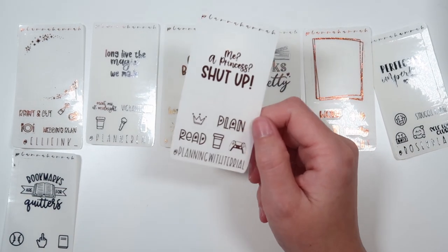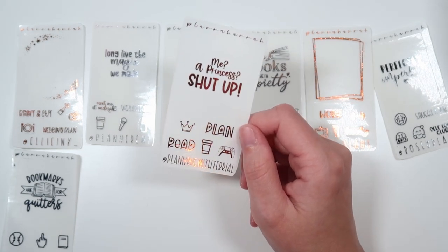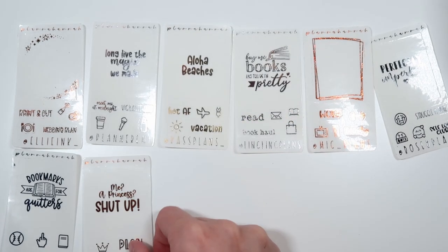Then we have Terrielle. This is her freebie. It's being shown to you in pumpkin. Her quote says meet a princess. Shut up. Then we have plan and read scripts. Then we have a crown, a coffee cup, and a gaming controller.